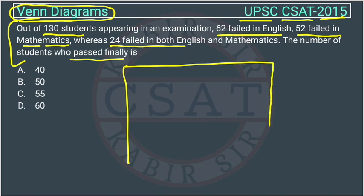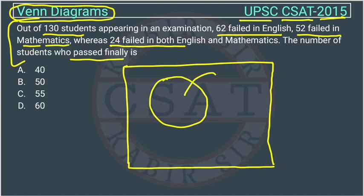Number of students passed will be equal to who are passing in both subjects. They are passing in English also and they are passing in math also. This will represent the total number of students, this is 130.